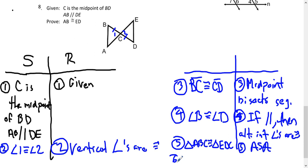So then, for the sixth step, I can go ahead and say that AB is congruent to ED. Why? Because of CPCTC, which means corresponding parts of congruent triangles are congruent. And this completes the proof.